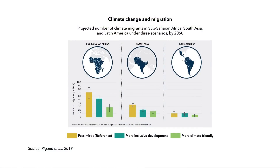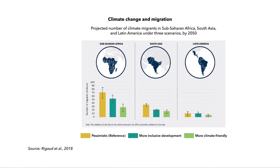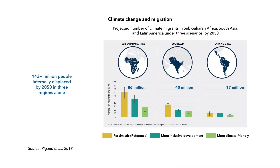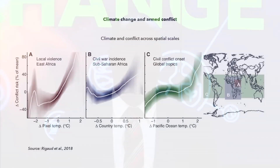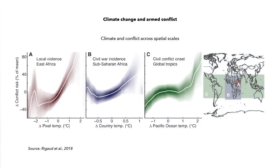Reduced agricultural productivity and other effects of climate change also cause mass migration of people. This graph from a World Bank report shows that climate change could internally displace more than 140 million people by 2050. Related to the problem of large-scale migration is the concern that climate change also contributes to violent conflict. This graph shows that temperature increases are linked to an increased risk of civil wars, although the causal link is not straightforward.